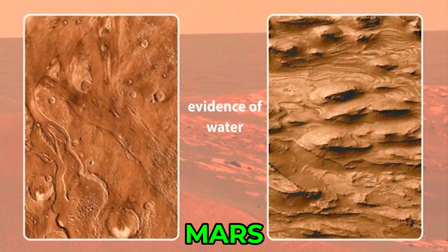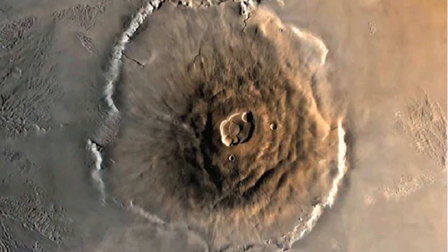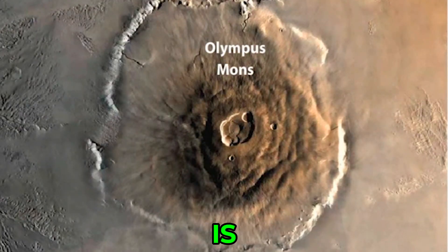Mars has a volcanic history, and the largest volcano in the solar system, Olympus Mons, is found there.